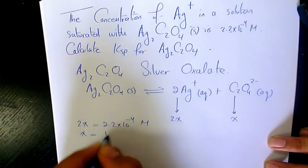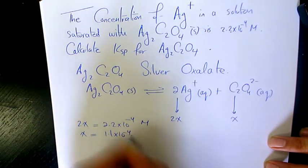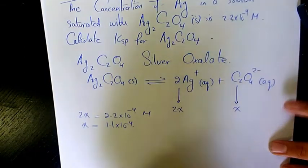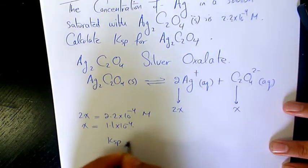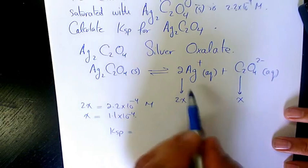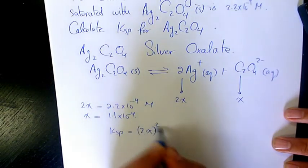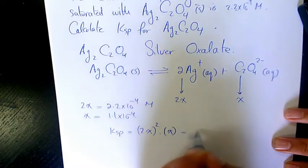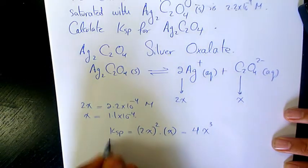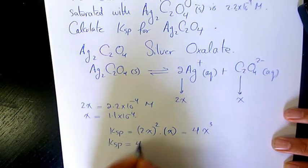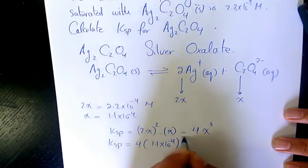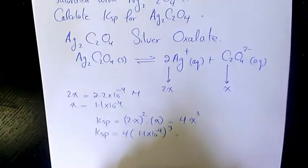It means that x is 1.1 times 10 to the power of negative 4. So Ksp will be 2x, which is 4x cubed. Ksp will be 4 times 1.1 times 10 to the power of negative 4 to the power of 3.